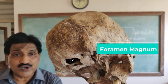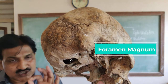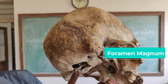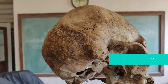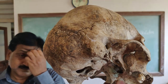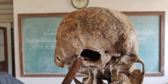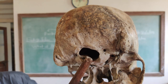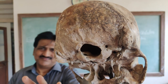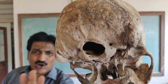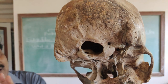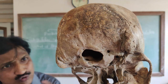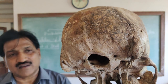What is the foramen magnum? It is present at the posterior end of the skull in the form of a large opening. The brain exits outside through this passage in the form of the spinal cord. That passage is called the foramen magnum.